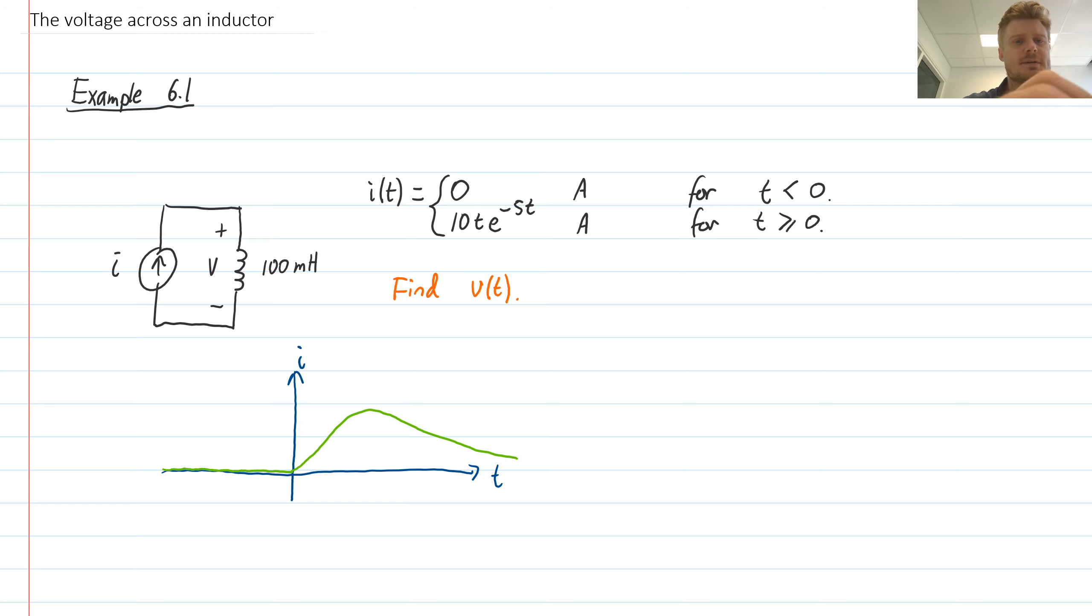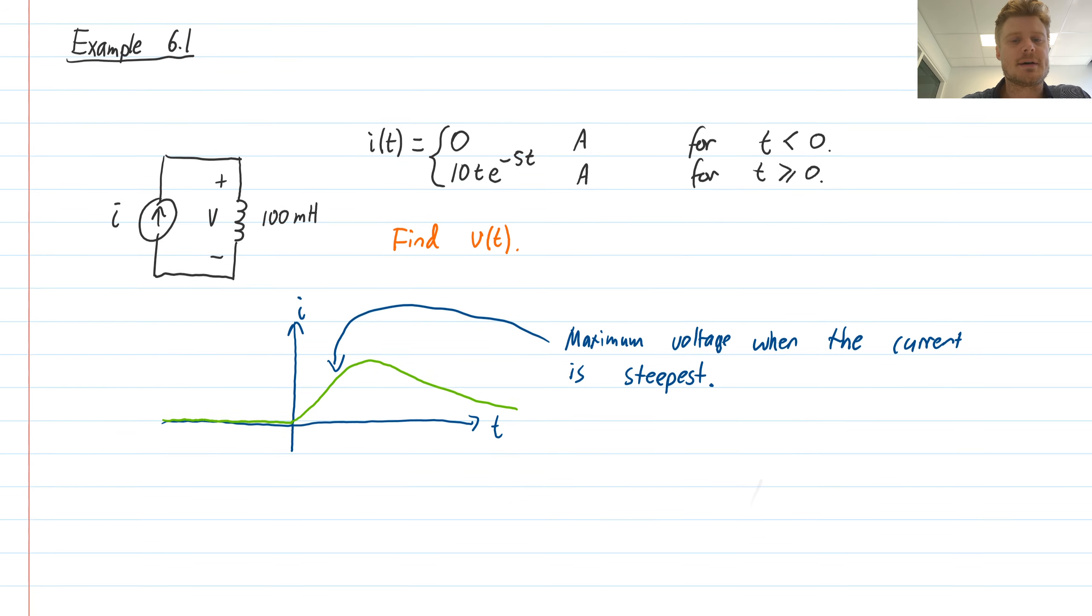My intuition about inductors says that I should have a maximum voltage when the current is steepest. Remember, it's the rate of change of current that actually matters for the voltage on an inductor. So I expect a maximum voltage somewhere here in the beginning, where that curve will be steepest. It's not when the current is largest; it's when the current is increasing most quickly.